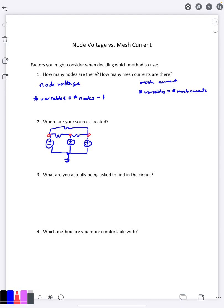On the other hand, if you have a lot of sources that are in between different pairs of nodes, well then maybe you'd have to use super nodes which might make things more complicated. Similarly, if you're doing mesh current...